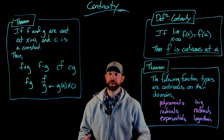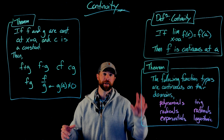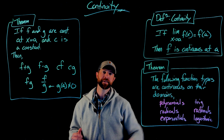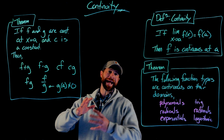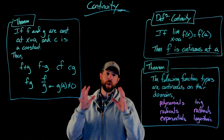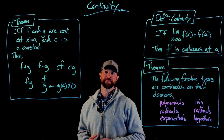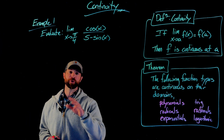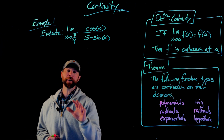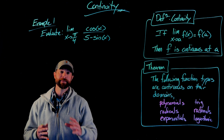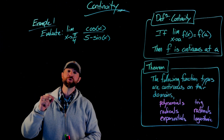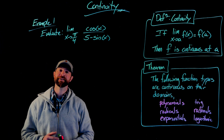We now have our definition of continuity and two very useful theorems: one says that nearly all function types we know are continuous on their domains, and the other says that if we add, subtract, multiply, or divide continuous functions, they remain continuous. Let's now see why that's useful. Here is our first example: the limit as x approaches pi over 4 of cosine of x over 5 minus sine of x. Up until this point, we couldn't use limit laws or direct substitution to tackle this, but we can use an argument based on continuity to easily evaluate this limit.